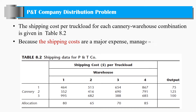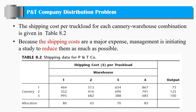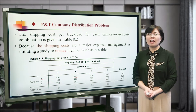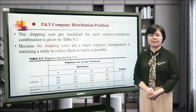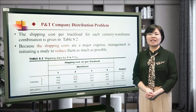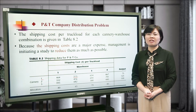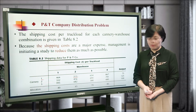As we can see, the middle of this table contains the unit cost. For example, this entry means the unit cost from cannery one to warehouse two. Because the shipping cost is a major expense, managers are initiating a study to reduce them as much as possible.